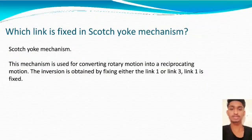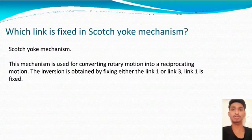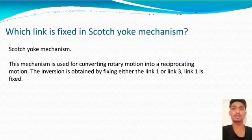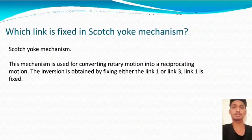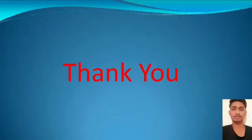Which link is fixed in the Scotch Yoke Mechanism? This mechanism is used for converting rotary motion into reciprocating motion. The inversion is obtained by fixing either link one or link two. When link one is fixed, it gives the standard configuration. Thank you.